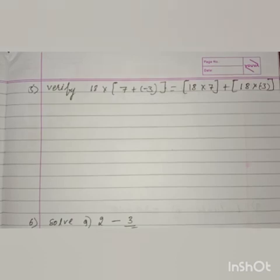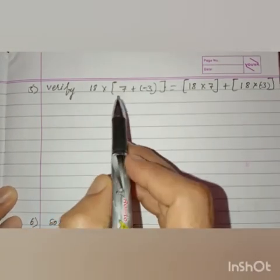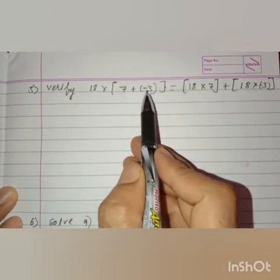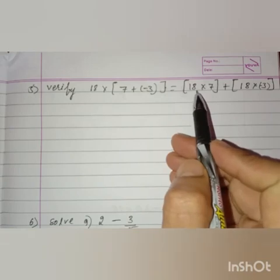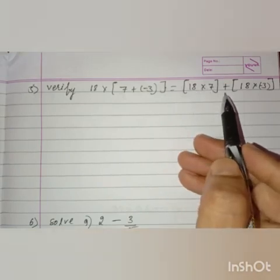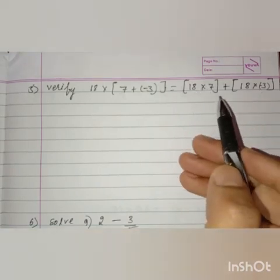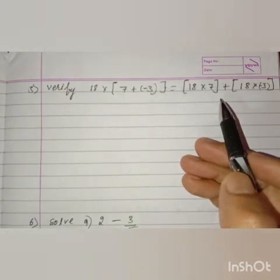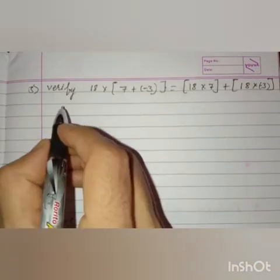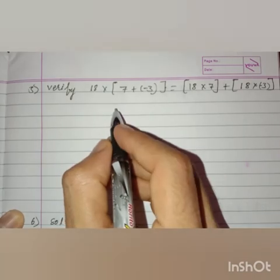Next, question number 5: verify 18 into (7 + (-3)) equals 18 into 7 plus 18 into (-3). This is according to the distributive property of multiplication over addition. Let us solve now.